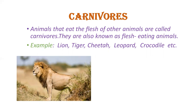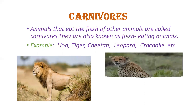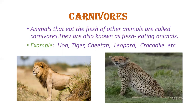Unki jo teeth hoti hai, kaisi hoti hai? Sharp and pointed. Because yeh kisi aur animal ko prey karte hai, unka jo flesh eat karte hai. So unki front teeth jo hoti hai, woh pointed aur sharp hoti hai. These help them to tear the flesh of their prey. They have strong, flat and broad teeth at the back of their mouth, jisse woh apne flesh ko achhi tarah se chew kar sakhe.